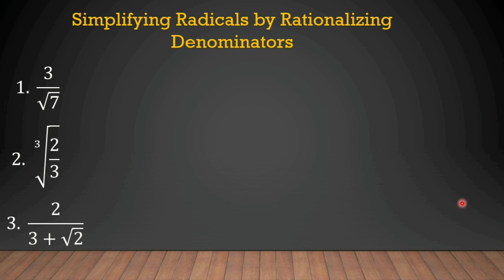Now let's move on to our last topic: simplifying radicals by rationalizing the denominators. Remember, we cannot have a radical number in the denominator. So, to remove the radical number from the denominator, we need to rationalize. To rationalize the denominator, we multiply the numerator and denominator by a number such that the radicand in the denominator becomes a perfect power.